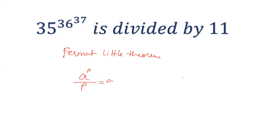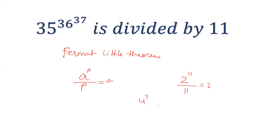For example, 2 to the power 11 divided by 11, the remainder will be 2. Also, 4 to the power 7 divided by 7 will always give remainder 4. You can check this as well. This is Fermat's Little Theorem.